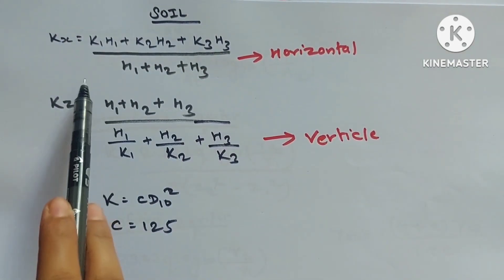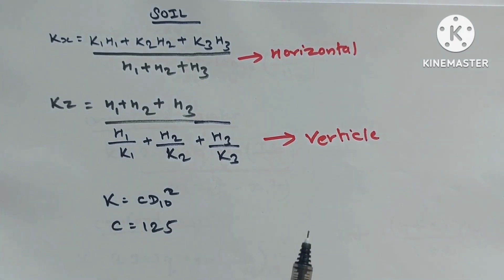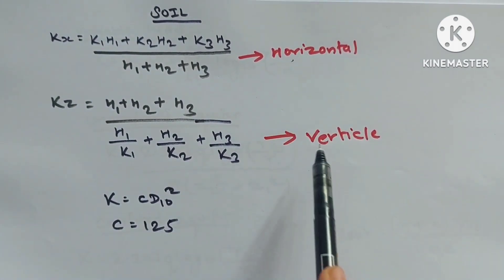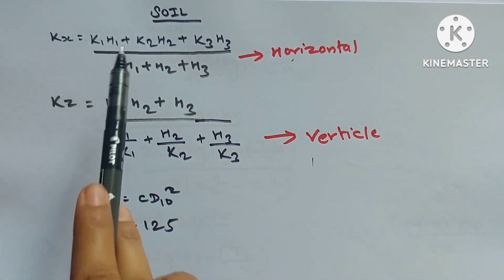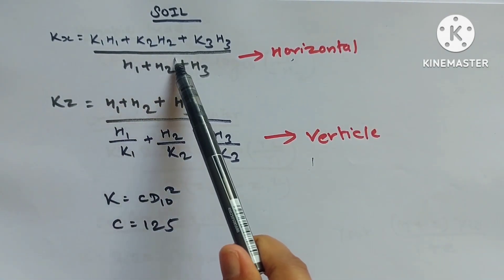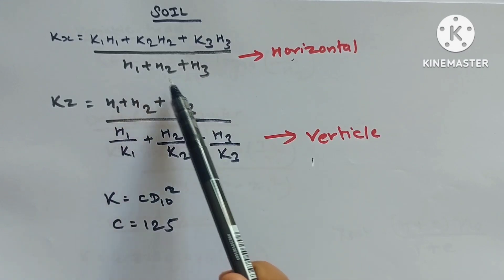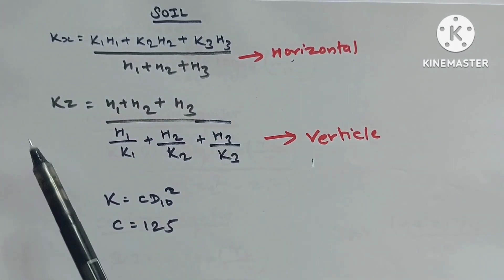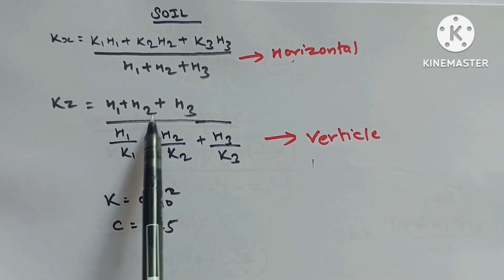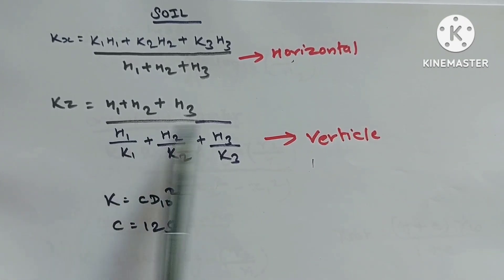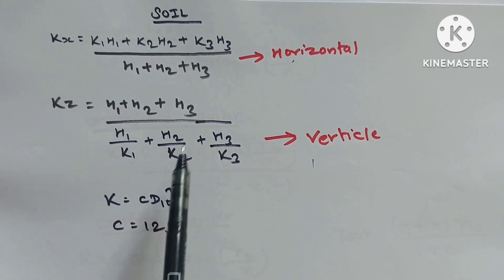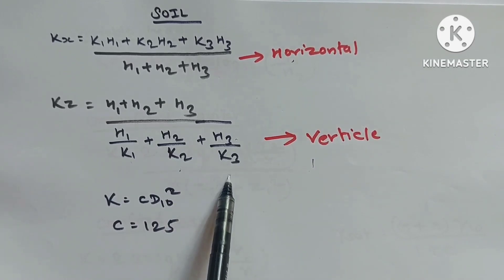Soil mechanics — permeability: Horizontal permeability Kx = (K₁H₁ + K₂H₂ + K₃H₃)/(H₁ + H₂ + H₃). Vertical permeability Kz = (H₁ + H₂ + H₃)/(H₁/K₁ + H₂/K₂ + H₃/K₃). Also K = C·D₁₀², where C = 1 to 5.